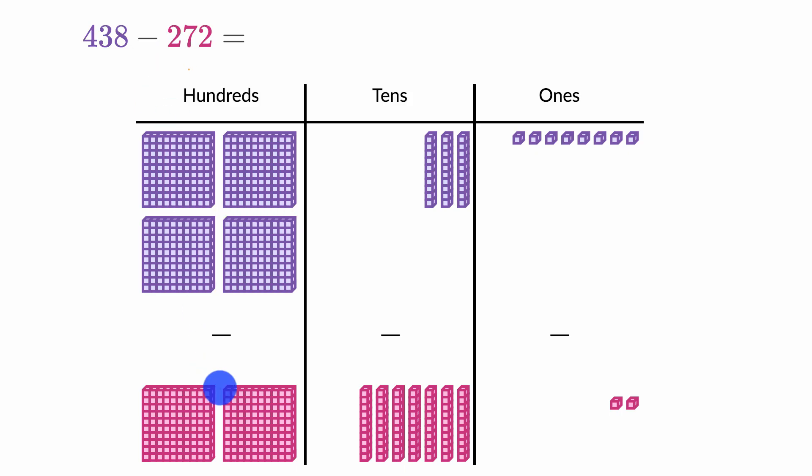we're gonna take away 200. So that's 200 right over there. Seven 10s, or 70, right over here. And two ones. So pause this video and see if you can figure out what this is going to be.